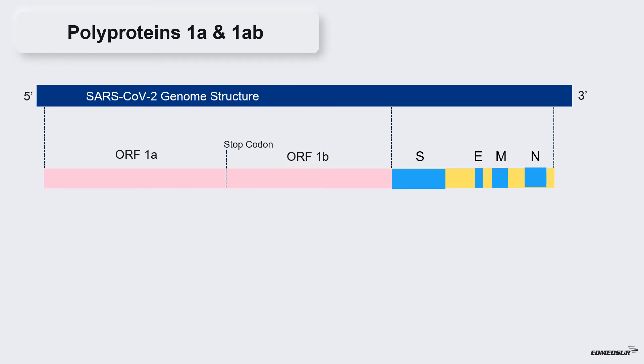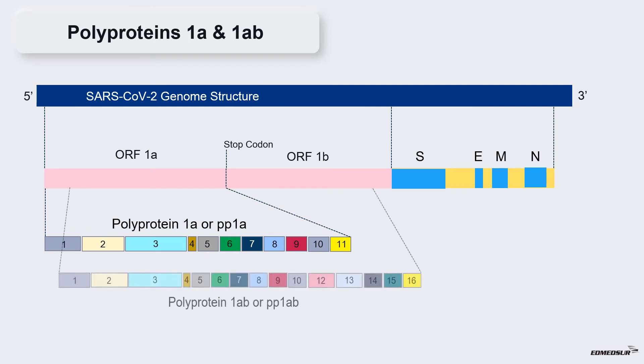In practice, it has been observed that about 50% of the time, the genes of ORF1a segment are translated to produce a polyprotein known as polyprotein 1a or PP1a.